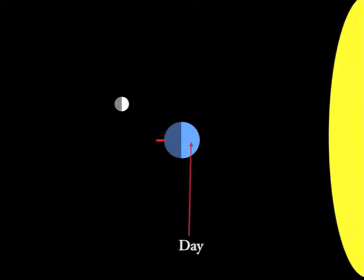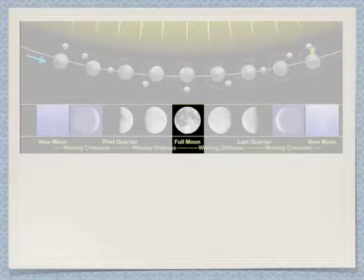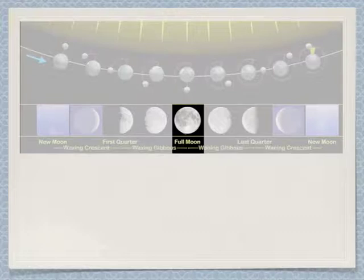So this is the side of the earth that has day — it's the side facing the sun. This is the side of the earth that has night. And this is you, the observer, looking up at the moon in the middle of the night. If you look up at the moon in the middle of the night at this time, you will see the full side of the moon that receives the light of the sun, and the moon will appear to be a full moon. So when the sun, the earth, and the moon are aligned in this fashion — in a straight plane — the moon will appear to be a full moon.